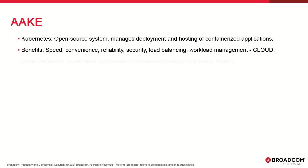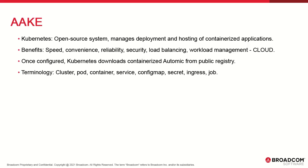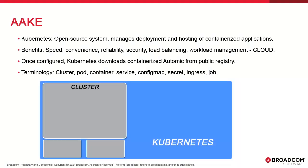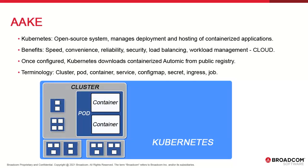Deploying Atomic Automation in a Kubernetes cluster means deploying a set of Atomic tools that make it possible to log into our public container registry — an Atomic repository of sorts — and download and deploy Atomic Automation as a containerized application. This is a bare-bones representation of a Kubernetes infrastructure: we have one or more clusters, each containing one or more pods, each containing one or more containers, in which we deploy the application components.